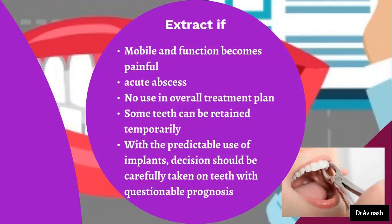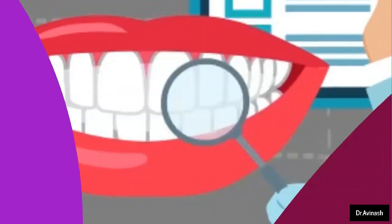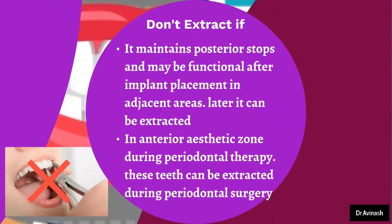Some teeth can be treated temporarily. With the predictable use of implants, the decision should be carefully taken on teeth with questionable prognosis — whether to extract immediately or to wait. If the tooth maintains the posterior stops and may be functional after implant placement in adjacent areas, we don't extract it immediately but at a later date when the implant process is complete. In the anterior aesthetic zone, we can delay the extraction until the time of periodontal surgery.